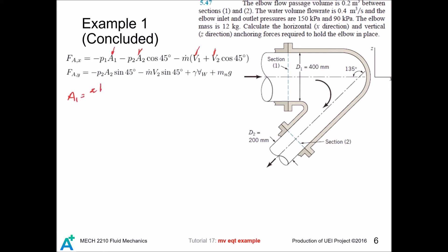We have area 1 equals pi d squared divided by 4. So we now have area.